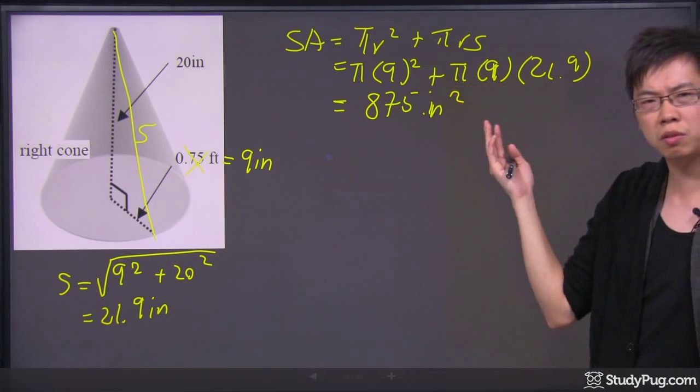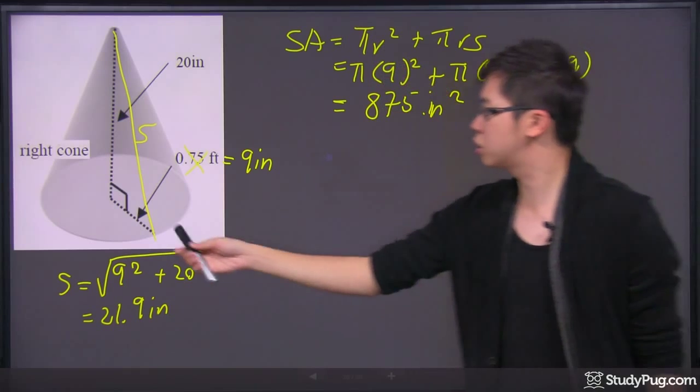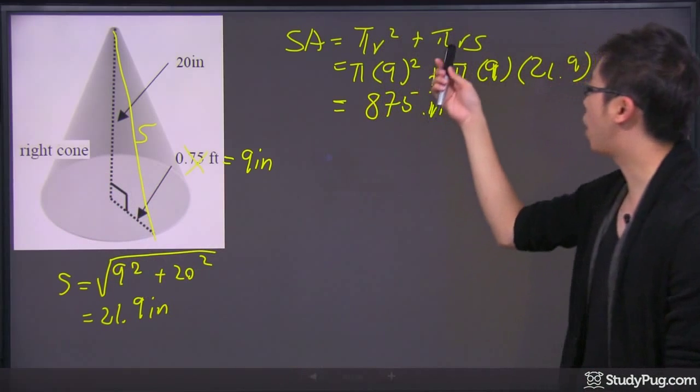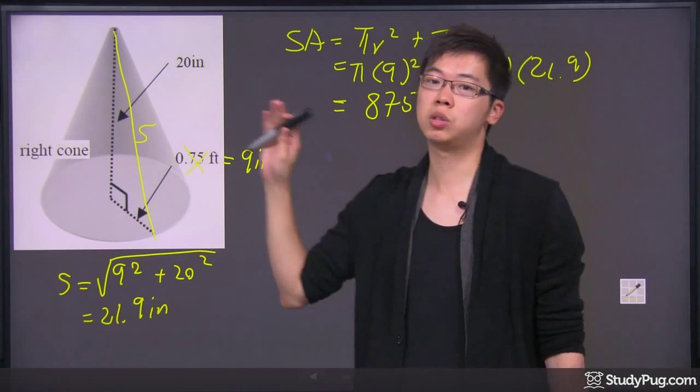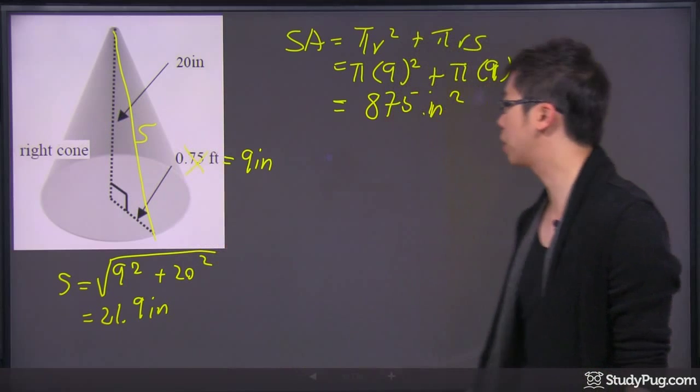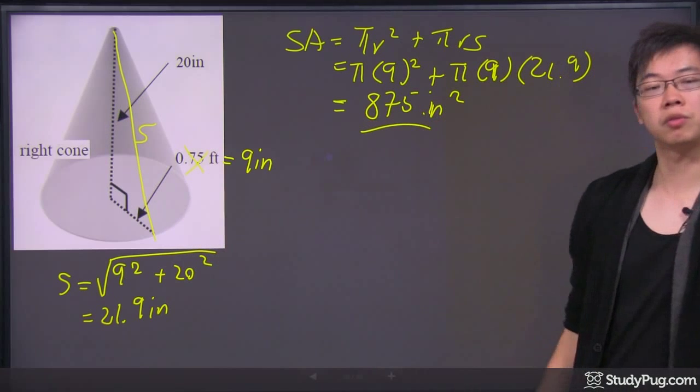If you're wondering why do we have two pieces of information, the πr² is for the base of the cone and the πrS is for the surface of the cone around it. That is the final answer for the surface area.